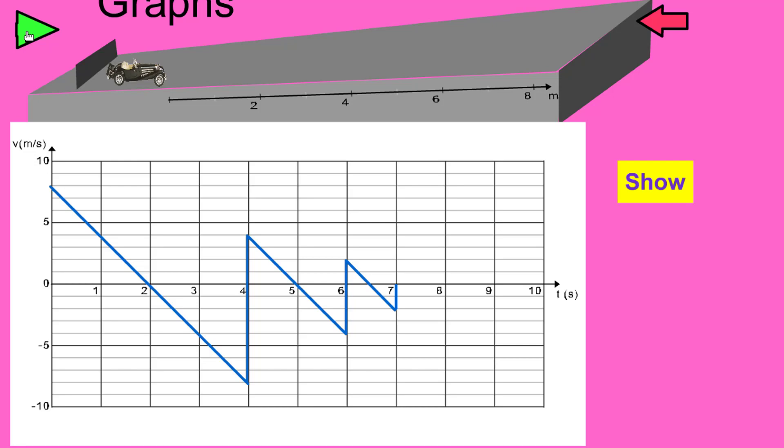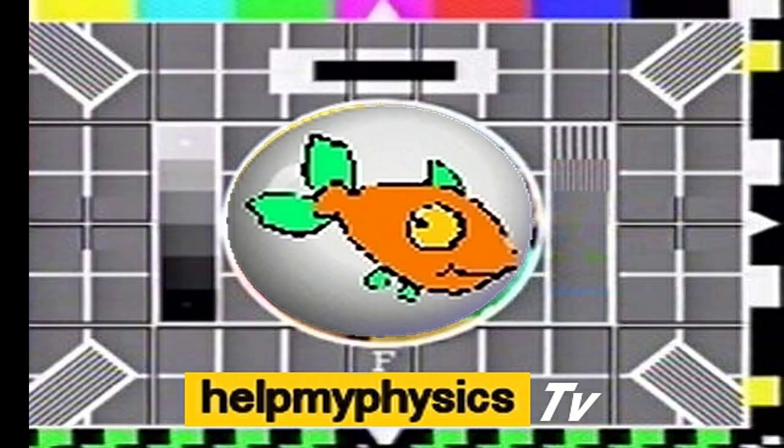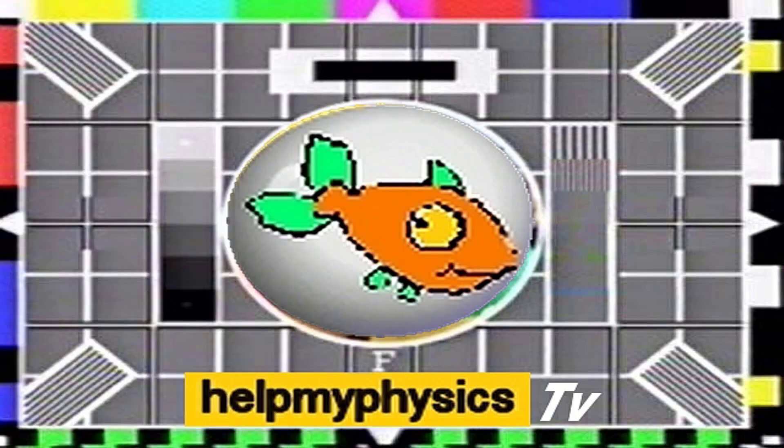So that's the velocity-time graph of a small car which is rolled up a slope, rolls back down again, and bounces. Physics is wonderful — physics is cool.